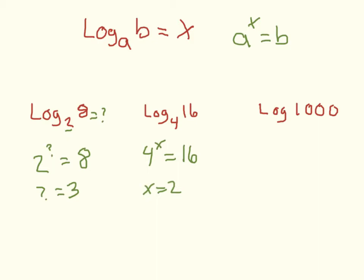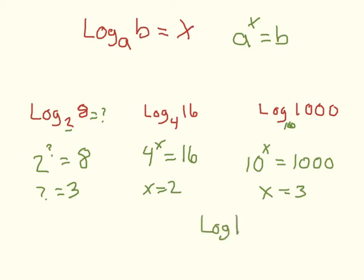In the last example, we just see the word log with no subscript base number. When you don't see a base number, you always assume the base is 10. So we're looking for 10 raised to some power to give us 1,000. That number is 3, because 10 raised to the third power equals 1,000. If you put log of 1,000 into your calculator, you'll find it equals 3. Every time you take the log of a number, it spits out an exponent.